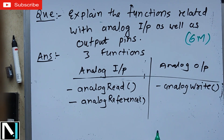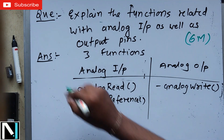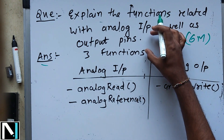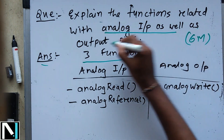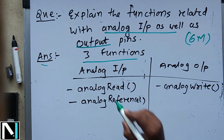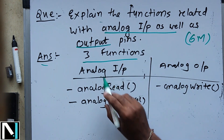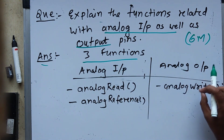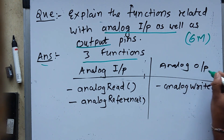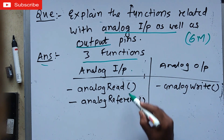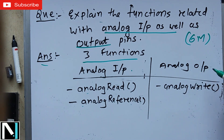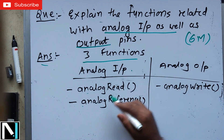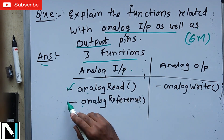This question carries six marks and has been asked twice in previous exams. The expected answer is that there are three functions related with analog input/output operations of Arduino. Two functions belong to analog input — analogRead and analogReference — and one function belongs to analog output — analogWrite.